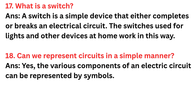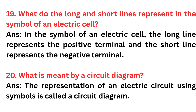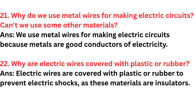Question eighteen: Can we represent circuits in a simple manner? Answer: Yes, the various components of an electric circuit can be represented by symbols. Question nineteen: What do the long and short lines represent in the symbol of an electric cell? Answer: The long line represents the positive terminal and the short line represents the negative terminal. Question twenty: What is meant by a circuit diagram? Answer: The representation of an electric circuit using symbols is called a circuit diagram. Question twenty-one: Why do we use metal wires for making electric circuits? Answer: We use metal wires because metals are good conductors of electricity. Question twenty-two: Why are electric wires covered with plastic or rubber? Answer: Electric wires are covered with plastic or rubber to prevent electric shock, as these materials are insulators.